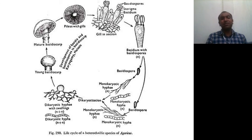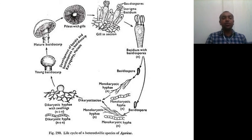This is in general the life cycle of the heterothallic species of Agaricus — mostly the edible fungus. Some of the economic importance: they are a rich source of protein, vitamins, and minerals, and can be used as a substitute in a protein-rich diet. This was all about the life cycle of Agaricus.